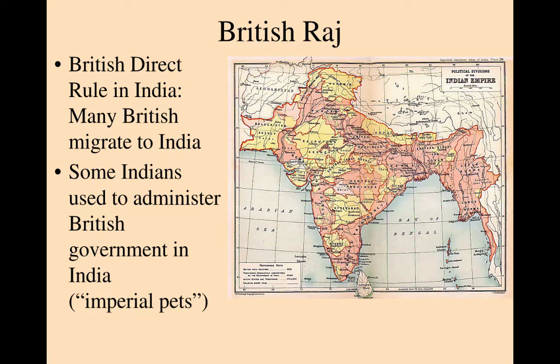The period of British direct rule in India is known as the British Raj. They co-opt this Indian term meaning 'princes' to talk about their direct rule and further legitimize it. At this point, many Brits began to emigrate to the region. Some Indians were privileged and used to administer the British government within India and elsewhere — a group I often term the 'imperial pets,' part and parcel of how the Brits ruled over their colonies. But we should note that a lot of Europeans did this wherever they ruled.